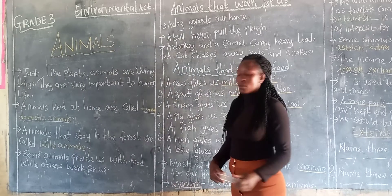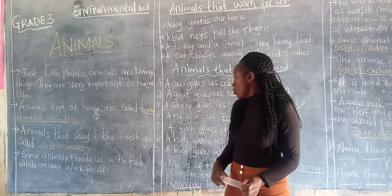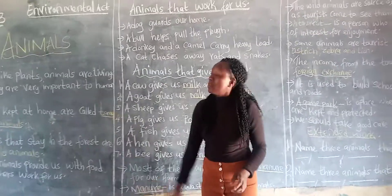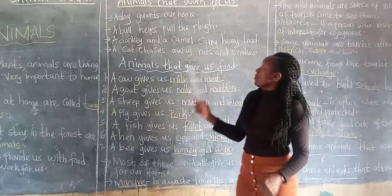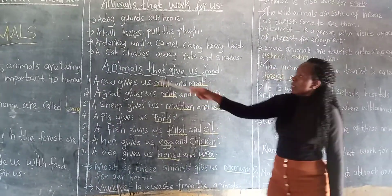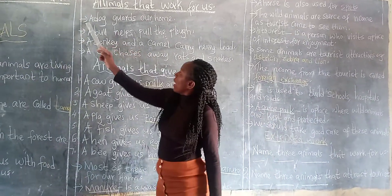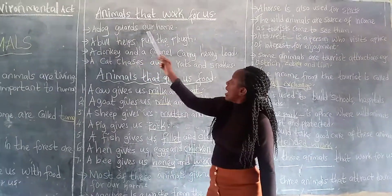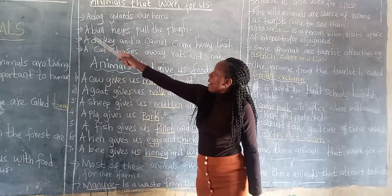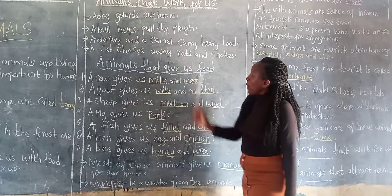So some animals provide us with food while others work for us. So we are going to start with the animals that work for us. We are going to start with animals like a dog. So a dog guards our home. Then a bull helps pull the plow.